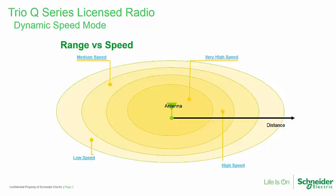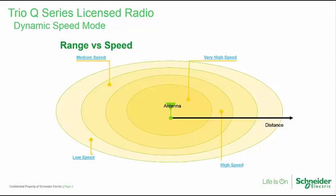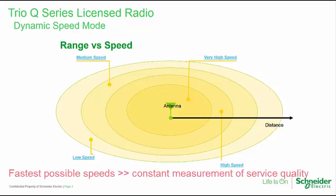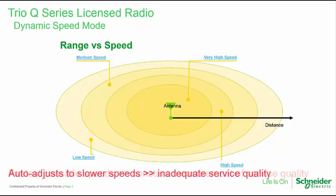In the TRIO-Q data radio, dynamic speed selection aids in this. It provides operation at the fastest possible speeds through constant measurement of the quality of service — which is the success of data delivery to the other end of the link — and by automatically adjusting to a slower speed if the quality of service is inadequate.